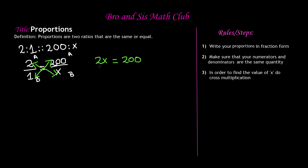Now we need to find out what X is. This is just a one-step equation. X is being multiplied by 2, so to get X by itself we do the reverse operation — division. We divide both sides by 2. The 2 cancels out, and we're left with X equals 100. That means student B is getting 100 pencils when student A is getting 200 pencils.